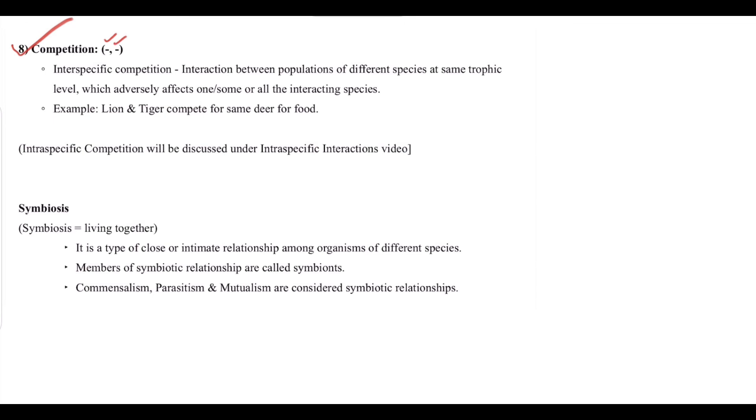Next we have competition, both are negative negative. Interspecific competition: interaction between populations of different species at same trophic level which adversely affects one or some or all the interacting species. For example, lion and tiger compete for same deer for food. Intraspecific competition will be discussed in another video.